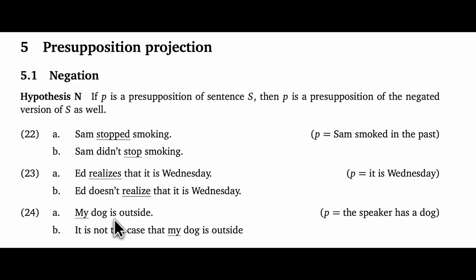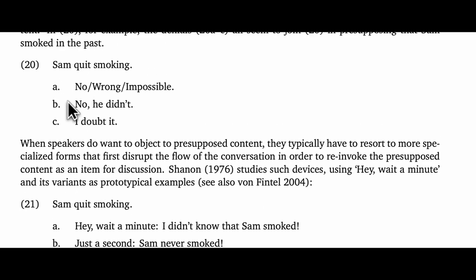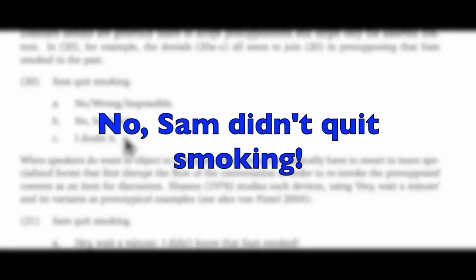I've also tested the presuppositions of the possessive 'my' starting with 'My dog is outside.' To make the negation scope syntactically over the trigger, I use 'It is not the case that my dog is outside.' This continues to commit the speaker to owning a dog, and pretty much any way you negate the full sentence will do this. This makes sense of our earlier observations about how hard it is to directly object to presuppositions: if someone says 'Sam quit smoking' and you reply 'no' or 'no he didn't,' your utterance is elliptical for 'No, Sam didn't quit smoking,' and by Hypothesis N that utterance carries the same presuppositions as the utterance you're trying to object to.